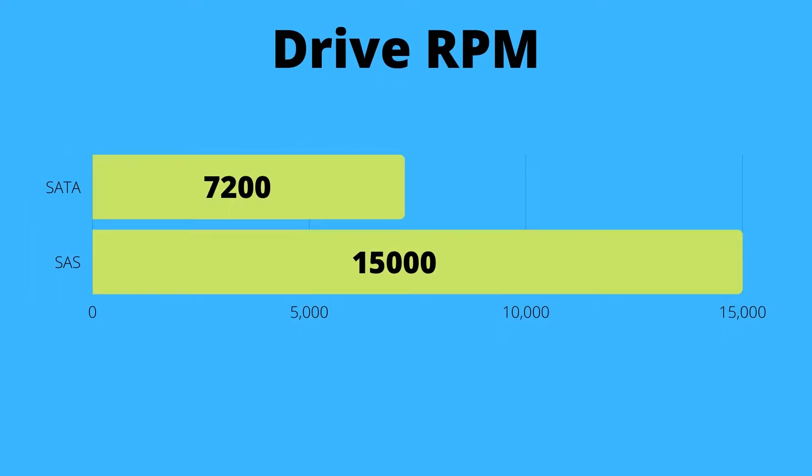Let's quickly take a look at the drive RPMs for SATA and SAS. As you can see from this table, SATA drives normally spin at around 7,200 RPM — this is the fastest you get for SATA. With SAS they spin all the way up to 15,000 RPM, though you also get drives that spin at 10,000 RPM. The reason SAS drives spin so fast is because they are actually faster.